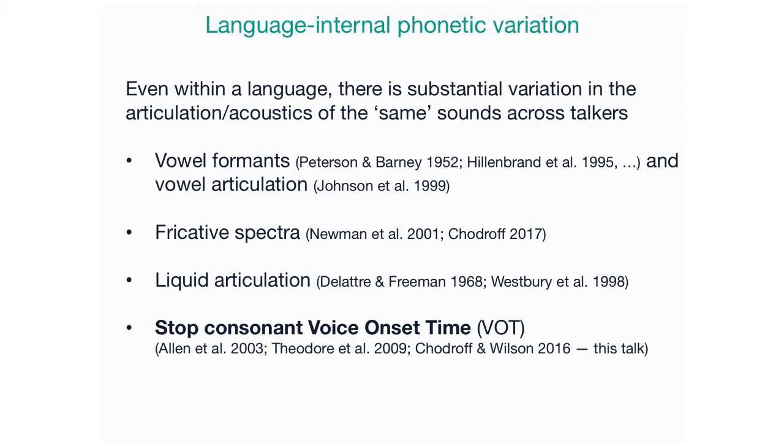It gets worse because even within a language, the same sound is not realized the same way phonetically. This sort of field of research started by looking at vowel resonant frequencies or formants almost exclusively, and in some cases relating that to articulation, in some cases finding articulatory differences that don't have much effect on the formants. But it's been extended to fricatives and liquids and all other sounds. And again, I'm going to talk about VOT. There have been a few studies of voice onset time variation across talkers internally to English, but it's been considerably extended by my graduate student Eleanor Shadroff, who's now a postdoc at Northwestern. So most of the work here will be based on what she did in her dissertation.